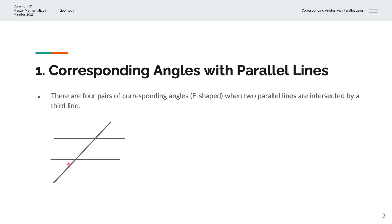If we were to label this angle as A, the corresponding angle B will be equal to A. So A equals B, being the first pair of corresponding angles. It is similar to an F-shape — this is the first horizontal line, this is the second horizontal line, and this is the vertical line, making the letter F.